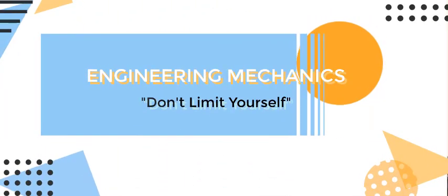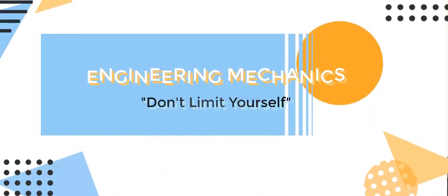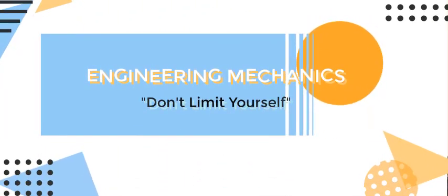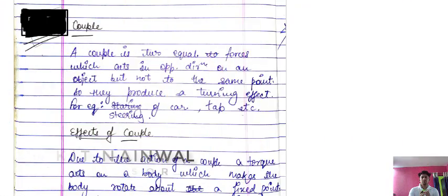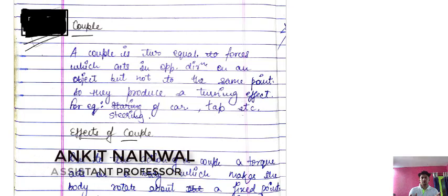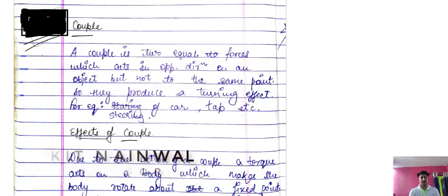Hello everyone, my name is Ankit Nainwal and today we will be discussing about the new topic, that is couple. So what is a couple? A couple is basically when two equal forces act in opposite directions on any object.